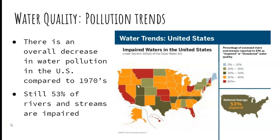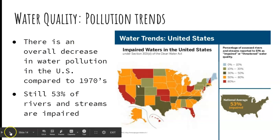In terms of water degradation trends, pollution has improved considerably since the 1970s. Still today, 53% of rivers and streams are impaired. I'm going to have you do a little exercise where you'll look at a USGS site that shows trends on specific rivers — look for that in the module.